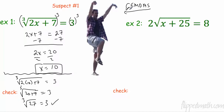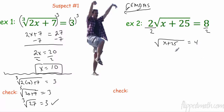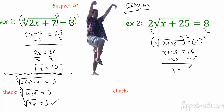Over here we have grouping with the square root, and we also have multiplication. The opposite of multiplying by 2 is dividing by 2. A lot of you in Algebra 1 didn't understand that this was 2 times the square root of x plus 25 — it's multiplying, not adding. So now I have the square root of x plus 25 equals 4. Squaring both sides gives x plus 25 equals 16. Subtract 25, and x is negative 9.